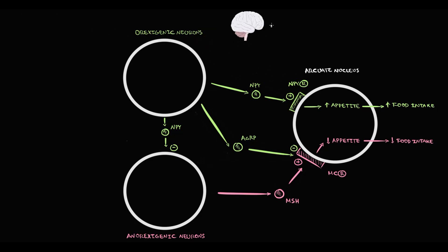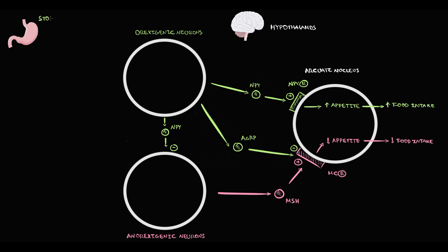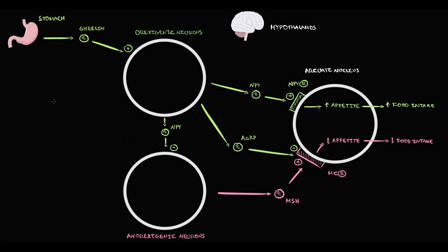All these processes occur in the hypothalamus. The function of orexigenic and anorexigenic neurons depends on peripheral signals received in the form of small peptides produced by various tissues. The first substance is ghrelin, produced by the stomach. Ghrelin stimulates the activity of orexigenic neurons, thereby increasing appetite. Ghrelin is the only substance with a truly orexigenic effect — because of this, we call it the hunger hormone.